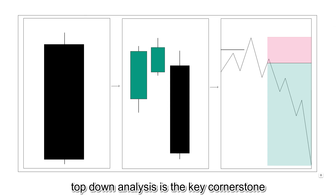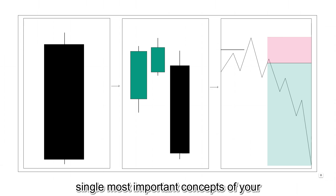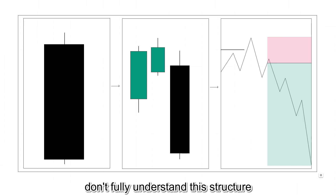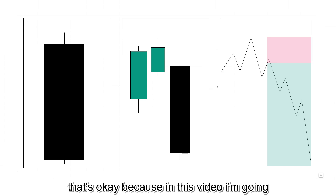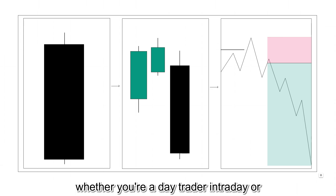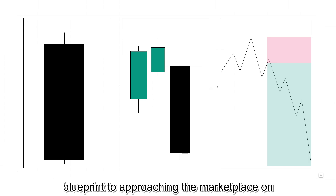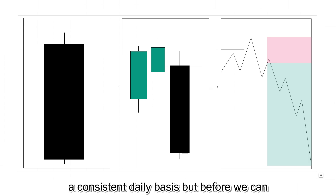Top-down analysis is the key cornerstone when it comes to developing daily bias inside the marketplace. This is one of the single most important concepts of your trading success, yet too many traders still don't fully understand this structure. In this video, I'm going to break down top-down analysis to its core, whether you're a day trader, intraday, or even a scalper, and give you the exact blueprint to approaching the marketplace on a consistent daily basis.